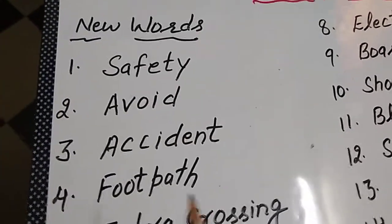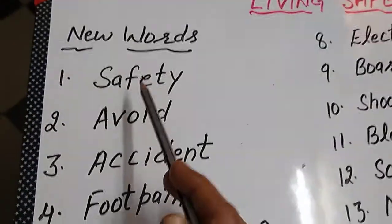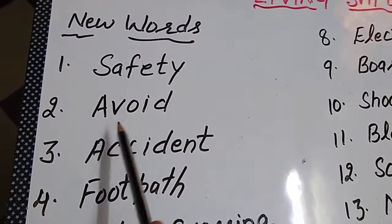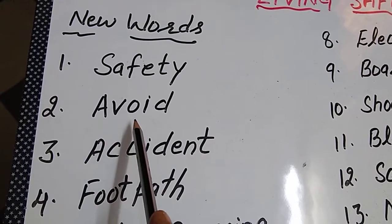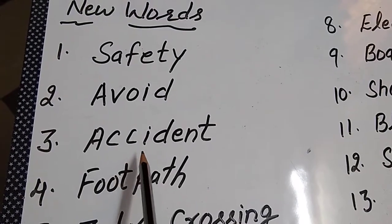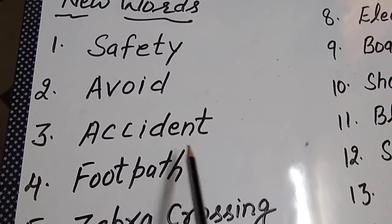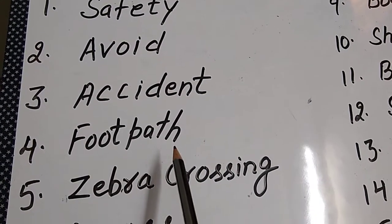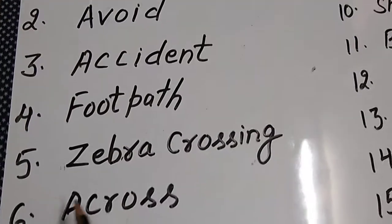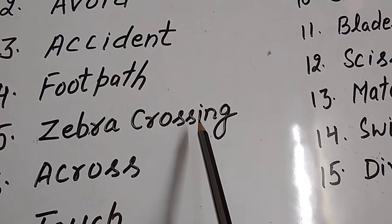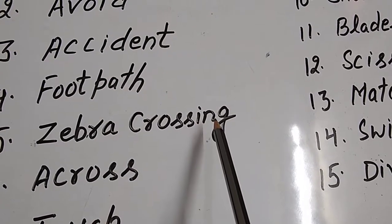Today we are going to read new words of this chapter. First: Safety — S-A-F-E-T-Y. Safety. Avoid — A-V-O-I-D. Accident — A-C-C-I-D-E-N-T. Footpath — F-O-O-T-P-A-T-H. Zebra Crossing — Z-E-B-R-A C-R-O-S-S-I-N-G.